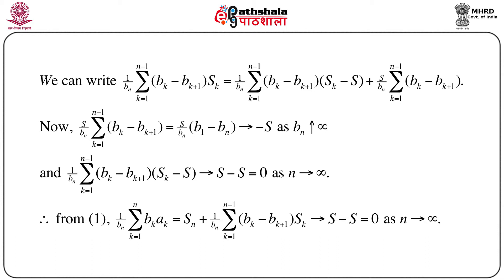From equation 1, we have (1/b_n) summation of b_k · a_k = s_n + (1/b_n) summation from k=1 to n−1 of (b_k − b_{k+1}) · s_k, which goes to s − s = 0 as n → ∞. That is basically Kronecker's Lemma: under the two conditions that summation of a_n converges and b_n increases to infinity, we have (1/b_n) summation of b_k · a_k goes to 0 as n → ∞. The proof is straightforward once you carefully manipulate the terms.